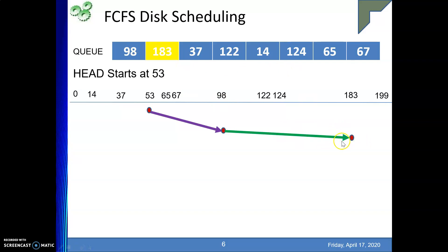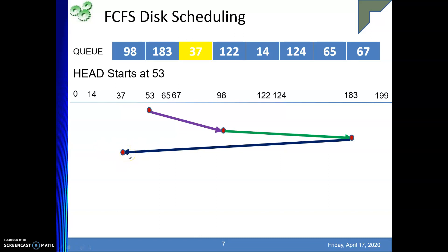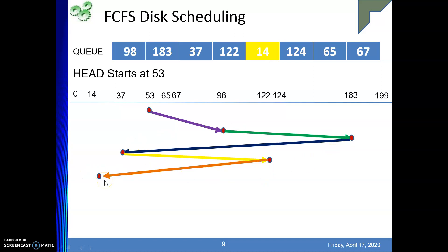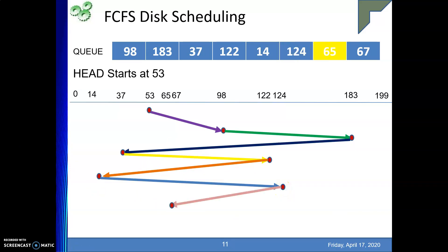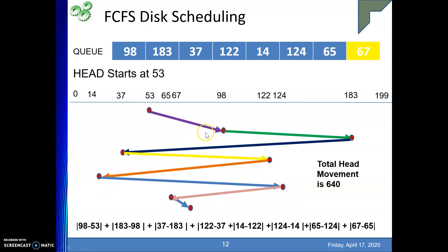From 37 we need to go to 122. Then from 122 we move to 14. Next from 14 we move to 124. Then from 124 we go back to 65, and then forward to 67. This is how requests are serviced in FCFS scheduling. The total head movement is 640, calculated by summing all displacements — for example, |98−53|, |183−98|, |37−183|, |122−37|, and so on. Always use the absolute (modulus) value; no negative displacement is counted.